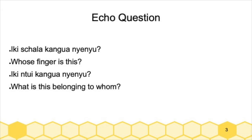I do have one echo question example. There's the wonderful example 'ikishara kaguanenyu' — whose finger is this — and the next question 'ikidoni kaguanenyu' — whose what is this, which Nico translated as 'what is this belonging to whom.' He was somewhat confused by this but did confirm it could be used in a very odd conversation.